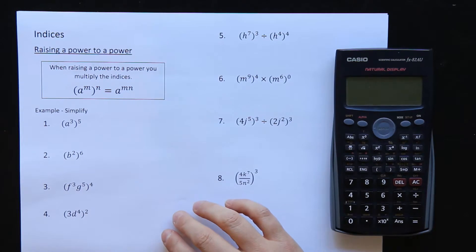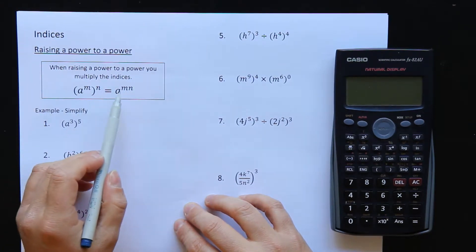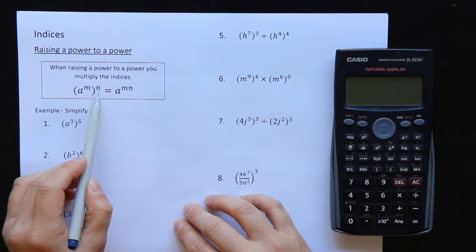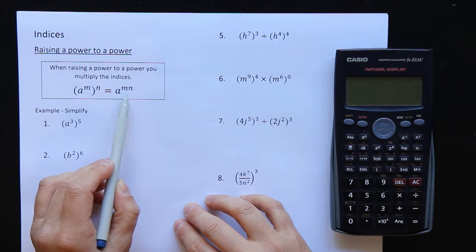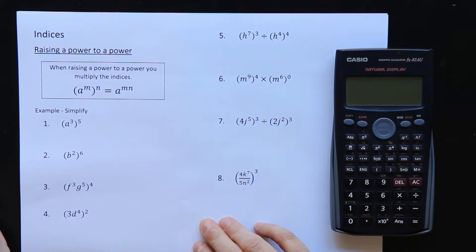So here is the rule. When raising a power to a power, you multiply the indices. So a to some power, another power outside the brackets. All I have to do is keep the same base and multiply the powers together. All right, so it's much simpler than what I was just doing on that paper.